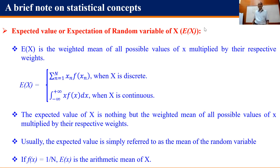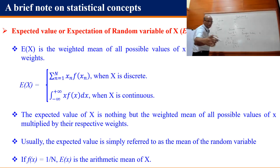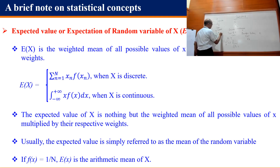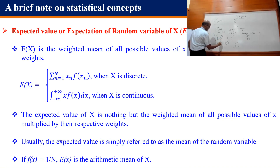The expected value is the weighted mean of all possible values of x multiplied by their respective weights. In common parlance it is simply the mean of the random variable. If f(xn) = 1/n, then E[X] = (1/n) · Σ xn, which is nothing but x-bar — the arithmetic mean.